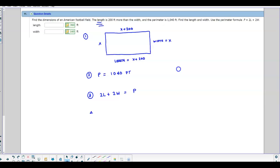So let's plug in the information that we have for the length. Well, the length we know, we called it x + 200. And we know the width, we call x. And we know the perimeter is 1040 feet. And so therefore, now we can just go ahead and solve.